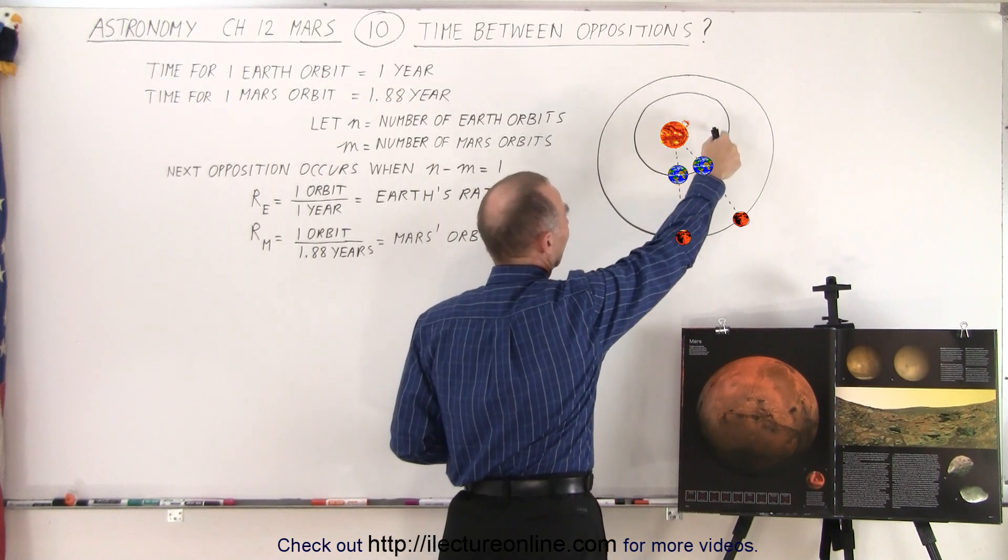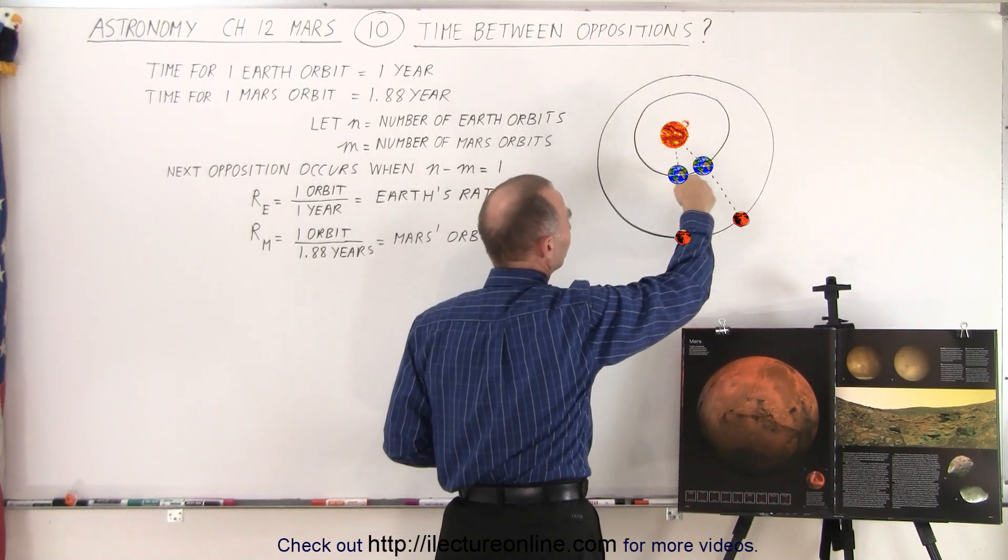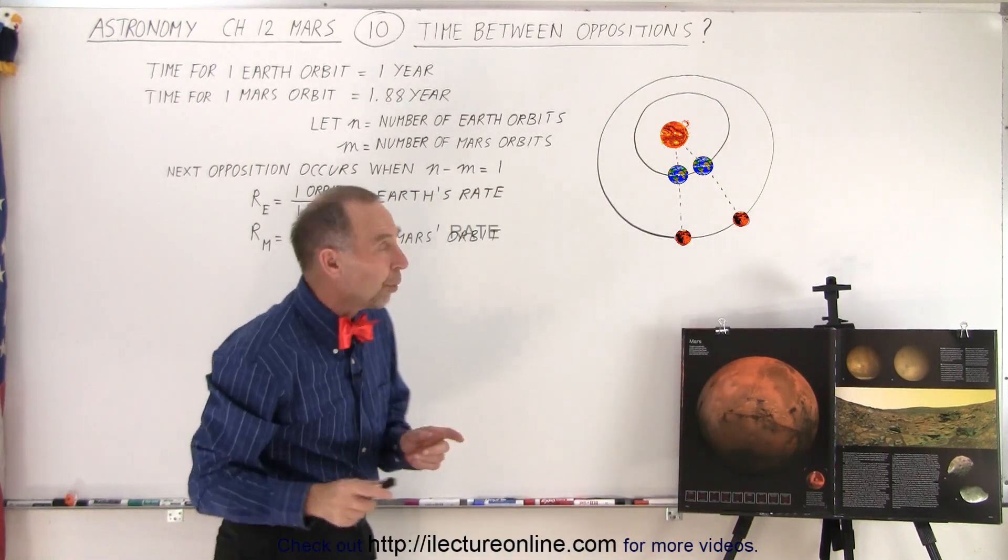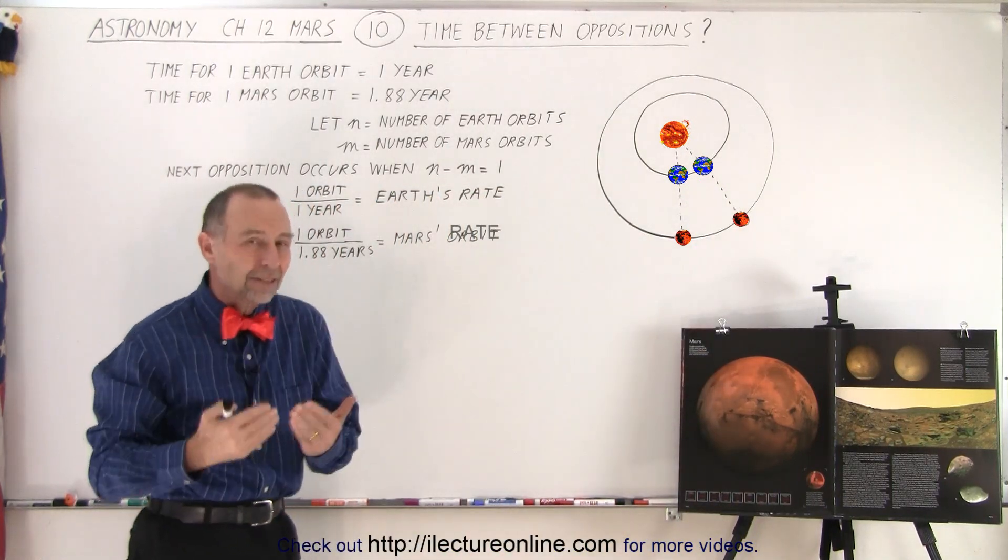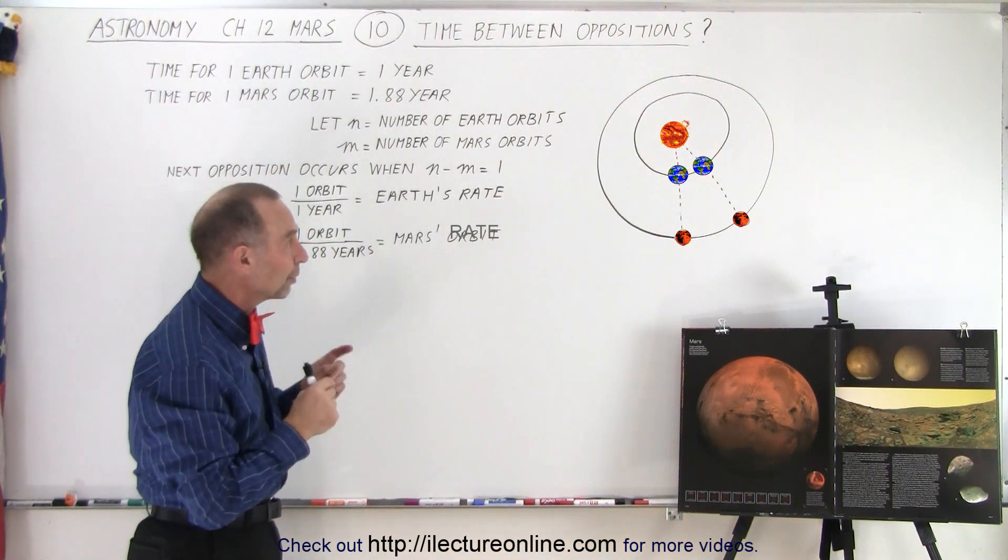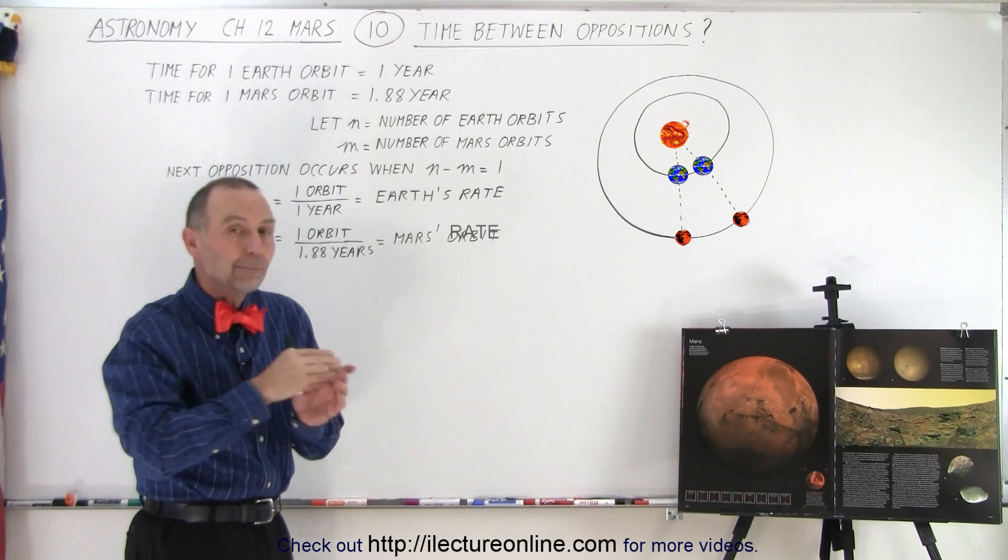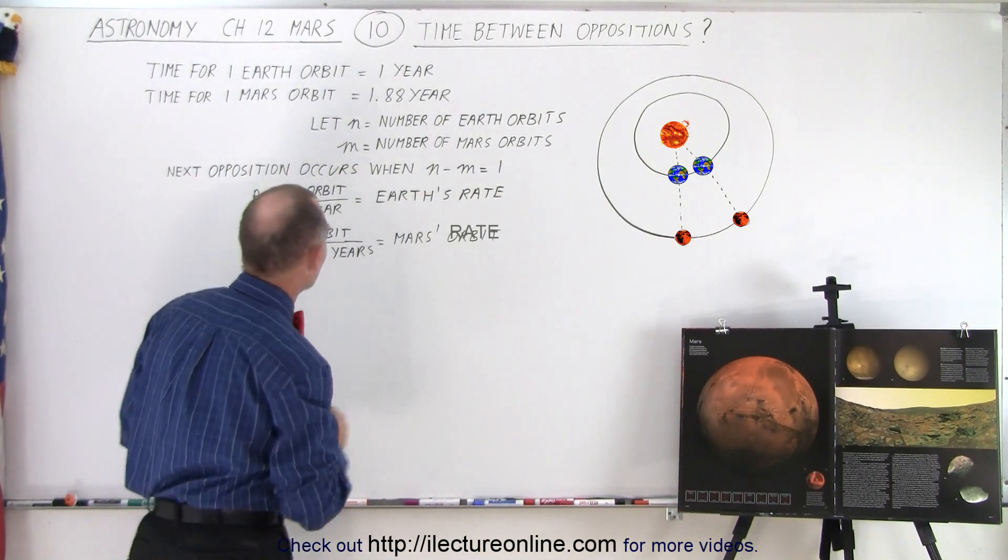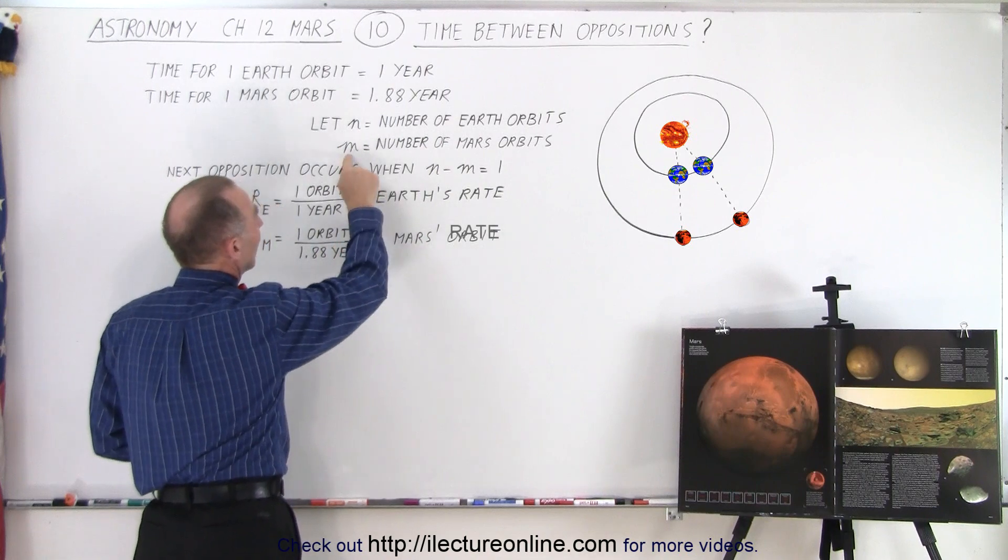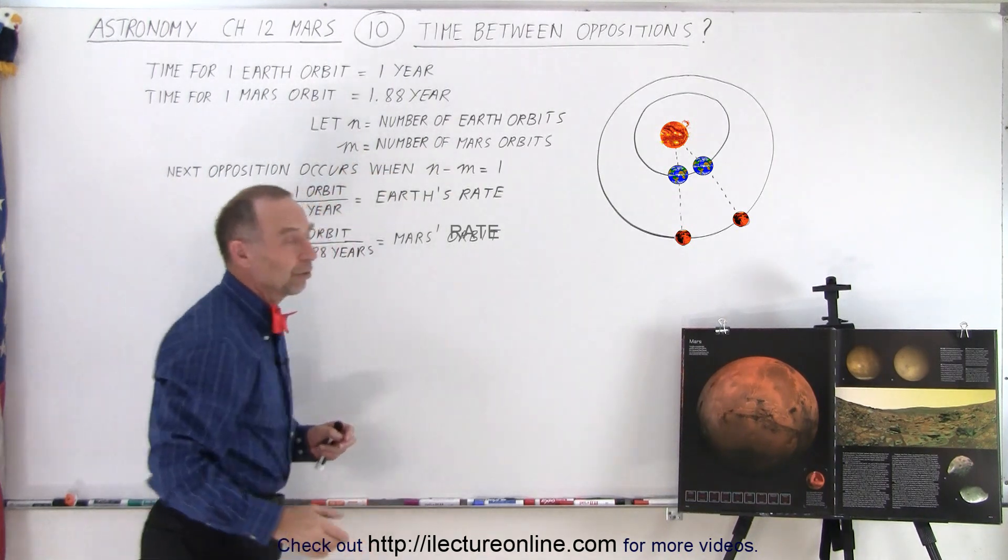Of course, Earth will get ahead of Mars and eventually will catch up to Mars again until they're perfectly aligned. So at one point, when they're at the next opposition, Earth will have completed one entire trip around the Sun more than Mars has. So when we come over here,